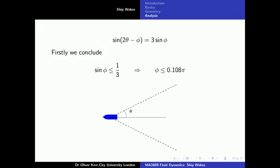If we look at the last equation on the previous page which is repeated here it is clear that the left hand side must have magnitude at most one. This means that the magnitude of sine phi must be at most one third. This gives a limit on the size of phi and means that all the waves in the wake must be contained in a wedge behind the boat of half angle arc sine one third which is approximately 0.108 times pi or just under 19.5 degrees.